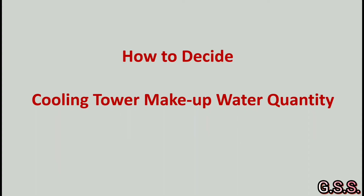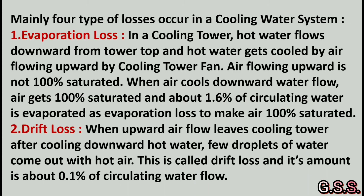Now we will see how to decide cooling tower makeup water quantity. Mainly four types of losses occur in a cooling water system. The first one is evaporation loss. In a cooling tower, hot water flows downward from the tower top and gets cooled by air flowing upward by the cooling tower fan. Air flowing upward is not 100 percent saturated.